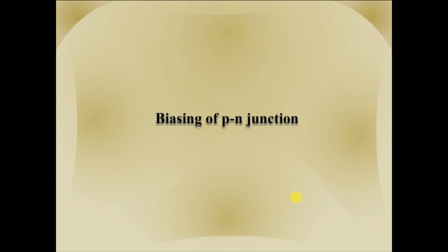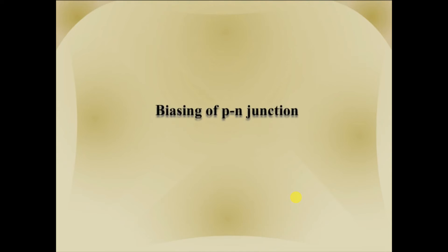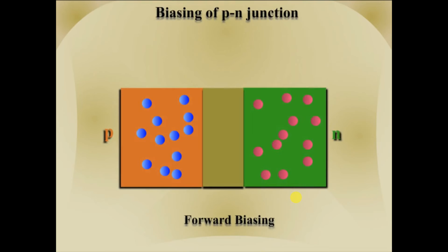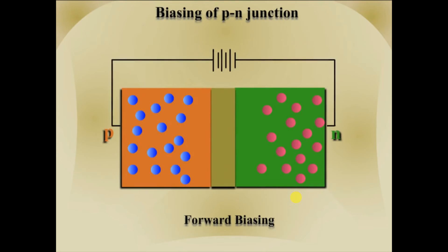Biasing of PN junction can be done in two ways: forward biasing and reverse biasing. In forward biasing, the p region of the junction is connected to the positive terminal of the external battery, whereas the n region is connected to the negative terminal. As can be seen from the diagram, the applied voltage V drops across the depletion layer and the potential barrier is reduced to Vb minus V.